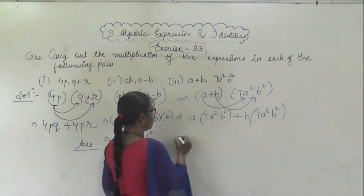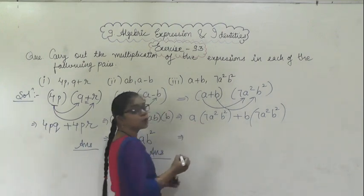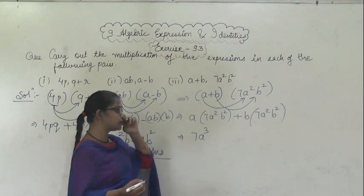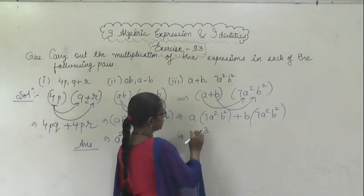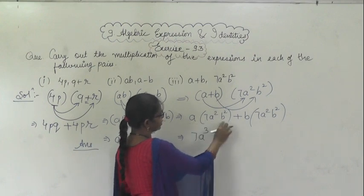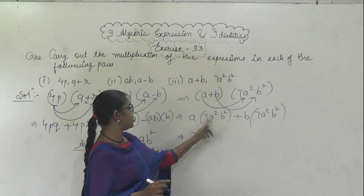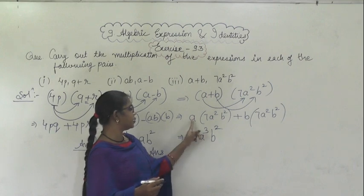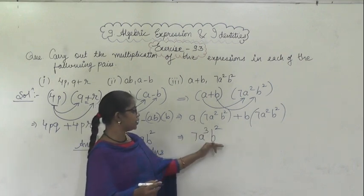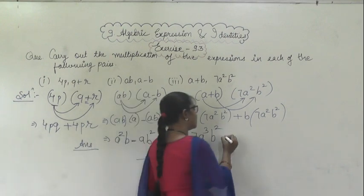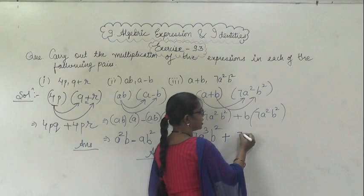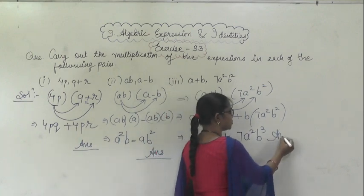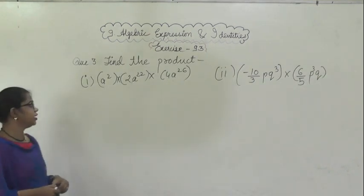Multiplying the terms: a into a² gives a³, so we get 7a³b², plus from the second part, 7a²b³. This is the answer for question number three.